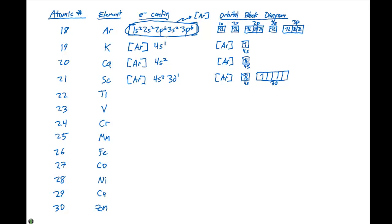For titanium, we have the argon core, then 4s2, 3d2. So when we draw our block diagram, we put two electrons in the 4s, and two electrons in the 3d.